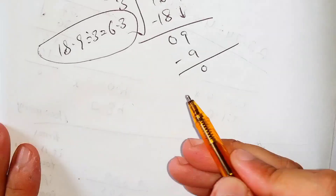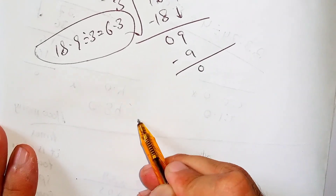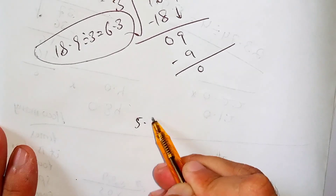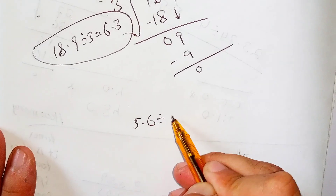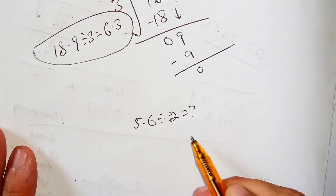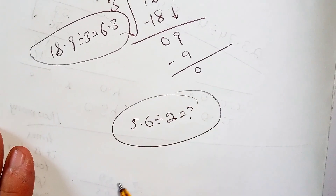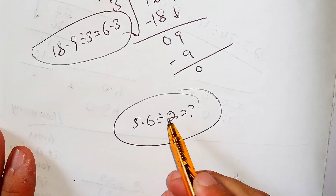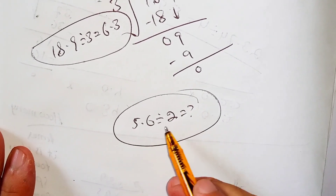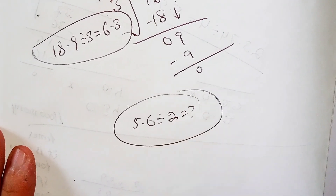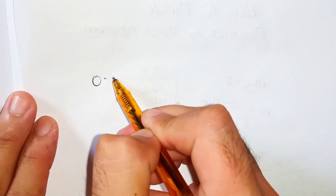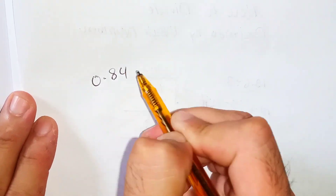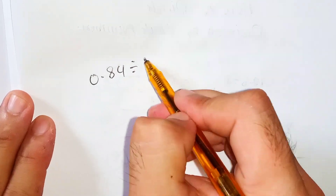Pause the video and comment the answer to 5.6 divided by 2 in the comment section. Now let's try another example: 0.84 divided by 6.